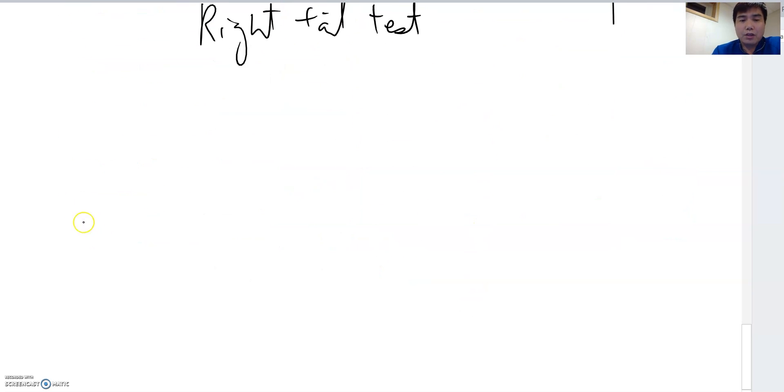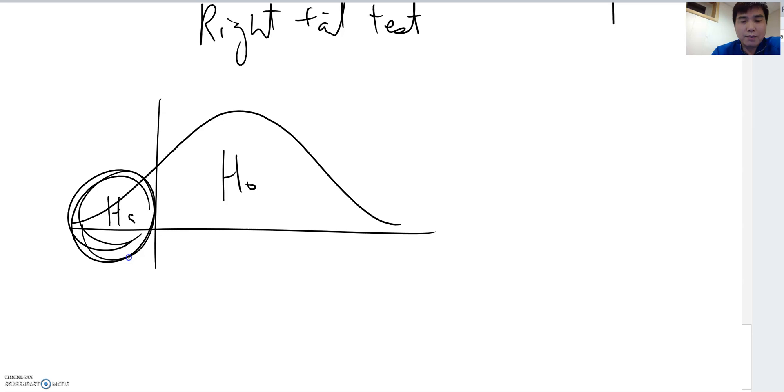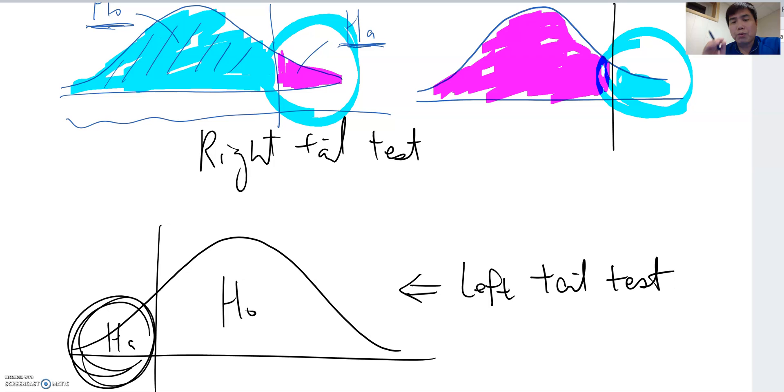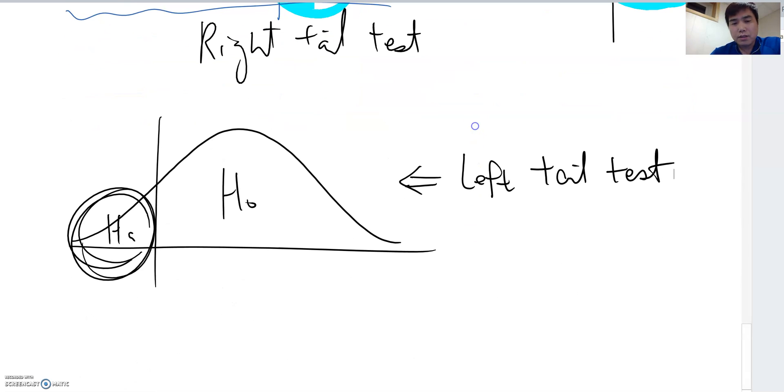Similarly, the normal graph is this is H0 and this is HA. As you see, HA is pointing out on the left side, therefore this one is left tail test. We always point out the unusual case, where the unusual opinion is located. If it is located on the right side, then we call it right tail test. If left side, then we call it left tail test.